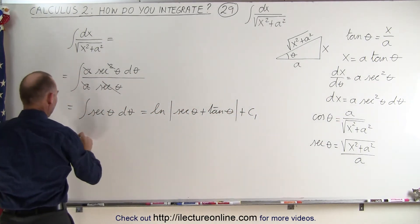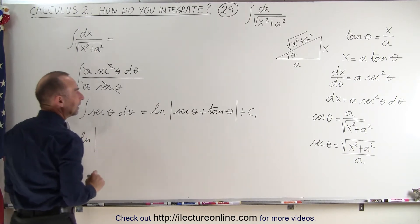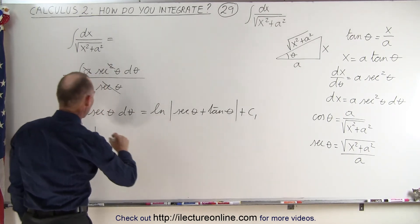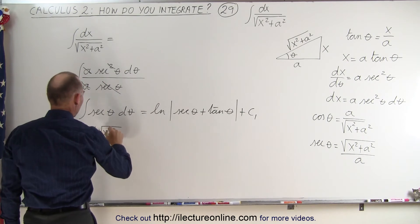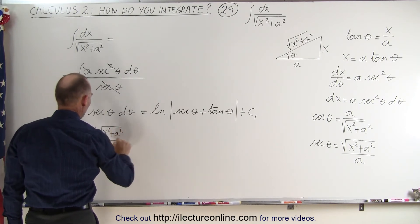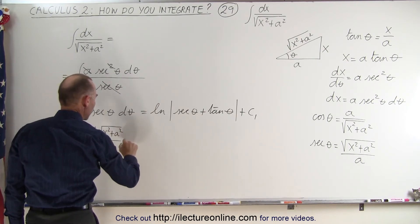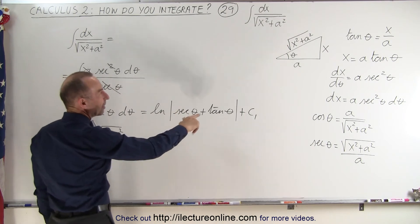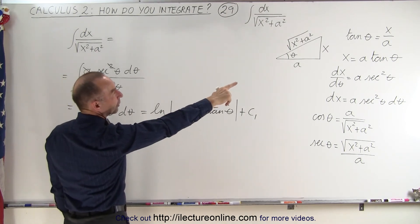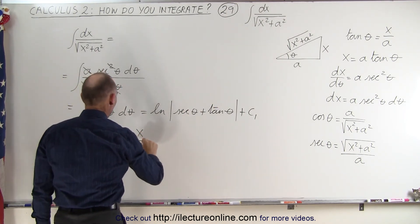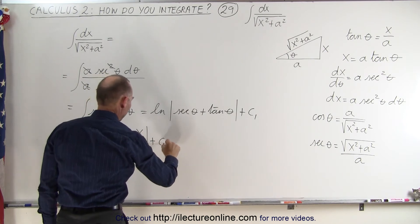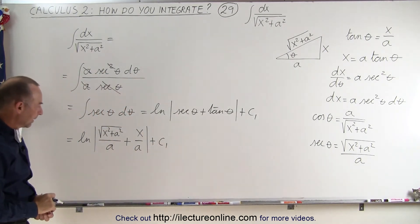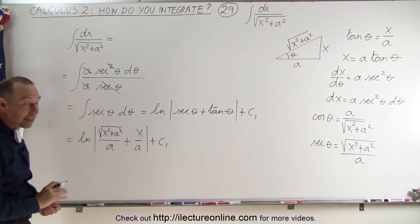So this can now be written as the natural log of — instead of the secant of theta, we're going to write it as the square root of x squared plus a squared over a, plus, instead of the tangent of theta, we can write it as x over a, plus a constant of integration.